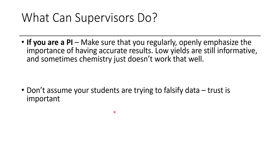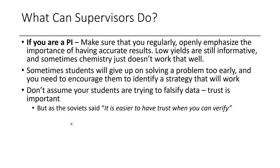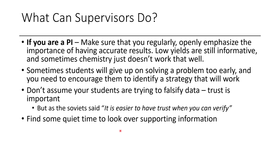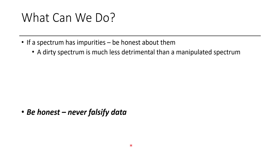It's also important to emphasize that you shouldn't assume your students are always trying to falsify data — it's important to have trust with your researchers. Just because some students falsify data doesn't mean yours are doing the same. Sometimes students give up on solving a problem too early, so encourage them to find a strategy that will work, but don't be a slave driver forcing them to pursue something that isn't working. As the Soviets say, it's easier to have trust when you can verify. Book time to quietly look over spectra for an SI before it's published. Don't ignore irregularities — if there's a weird overly-zoomed spectrum or something cropped oddly, have your students explain it. Even if nothing was intentionally falsified, this makes them stronger chemists.